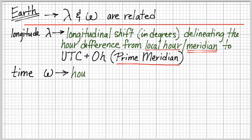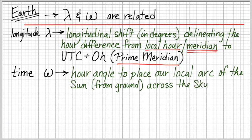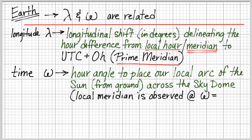Time itself has a local nature of our angle. You can imagine longitude as we're out in space looking down and watching time progress as the rotation of the Earth, whereas time as our angle is us on the Earth and placing our local arc of the sun from the ground across the skydome.